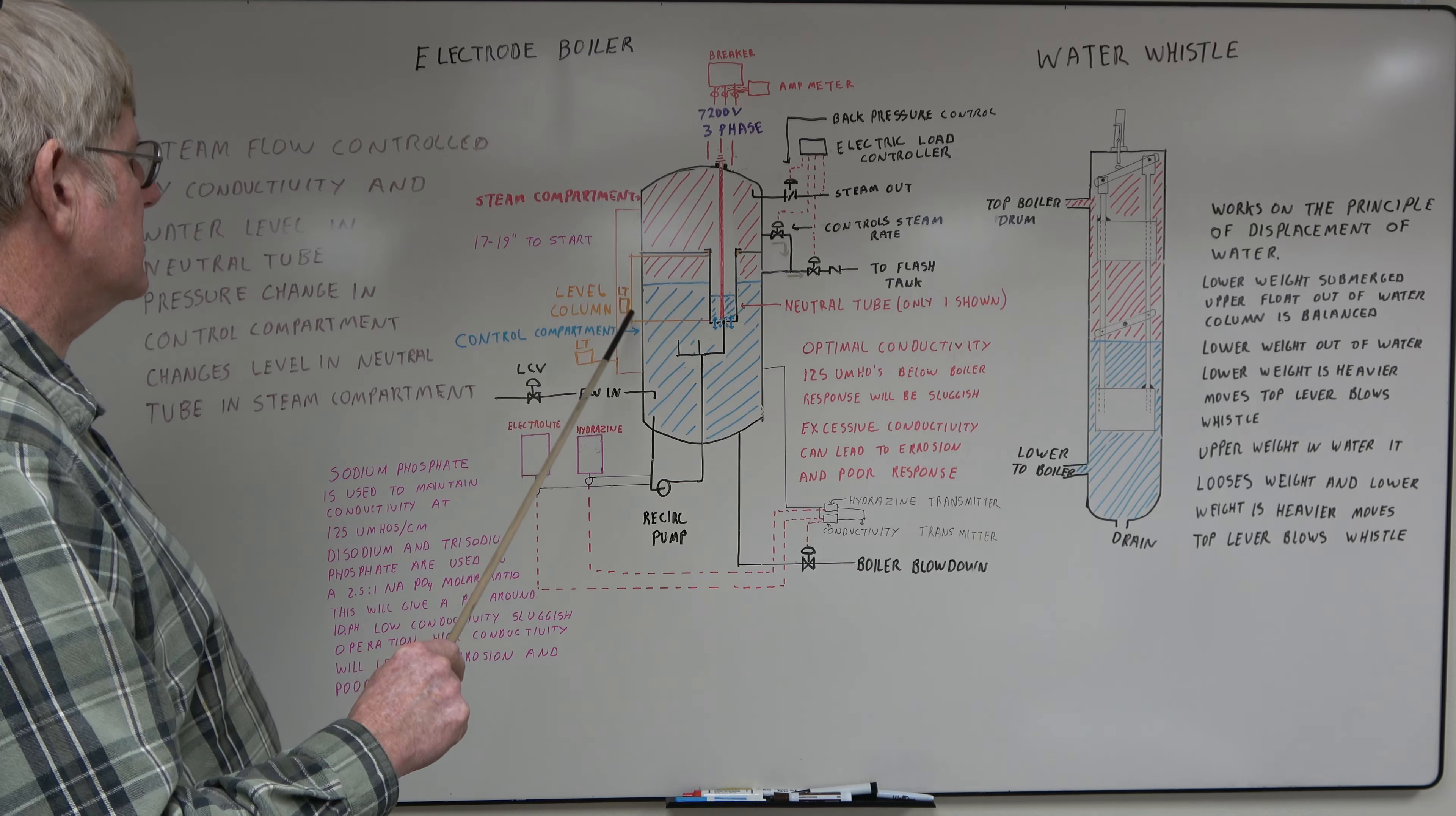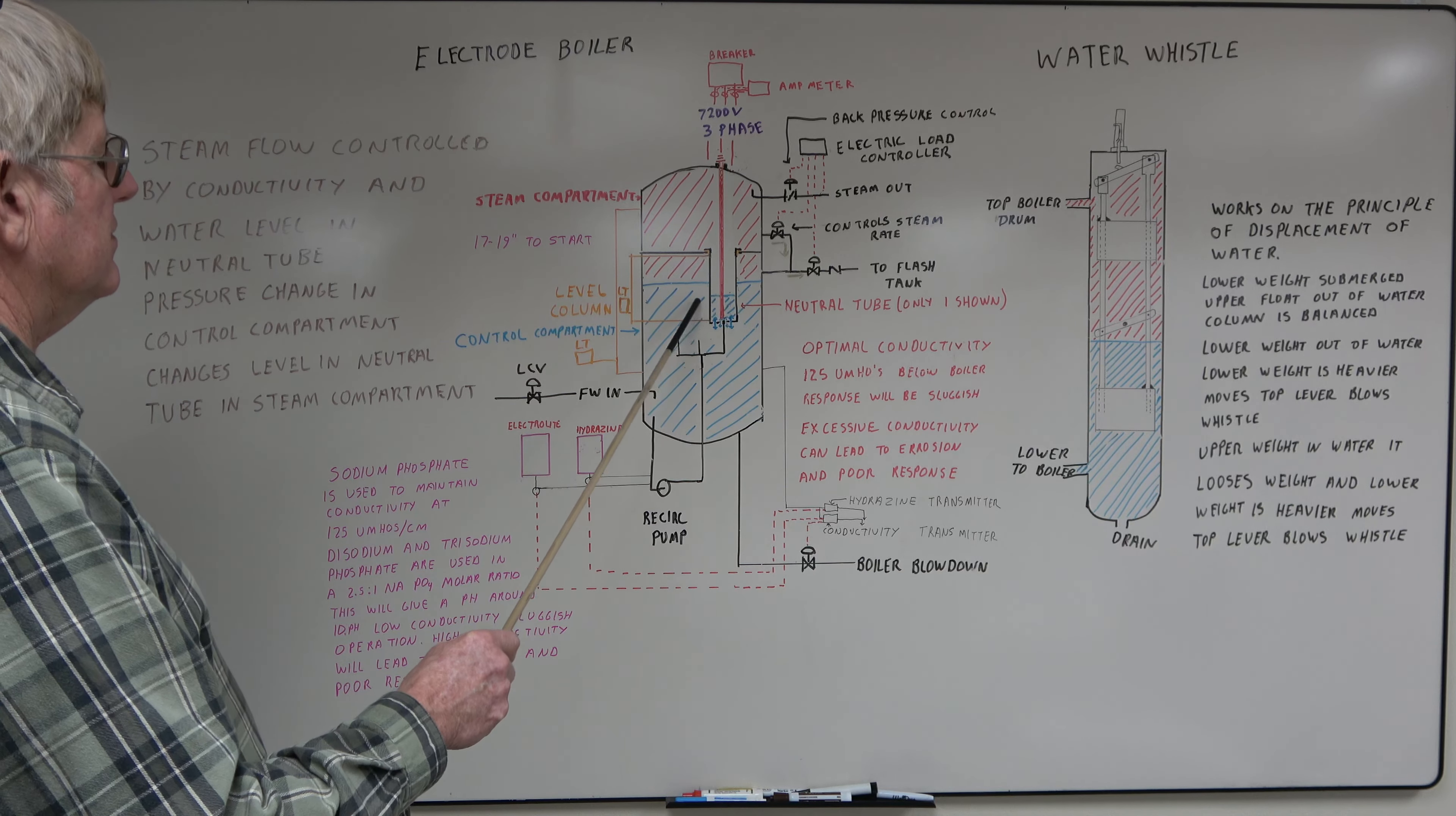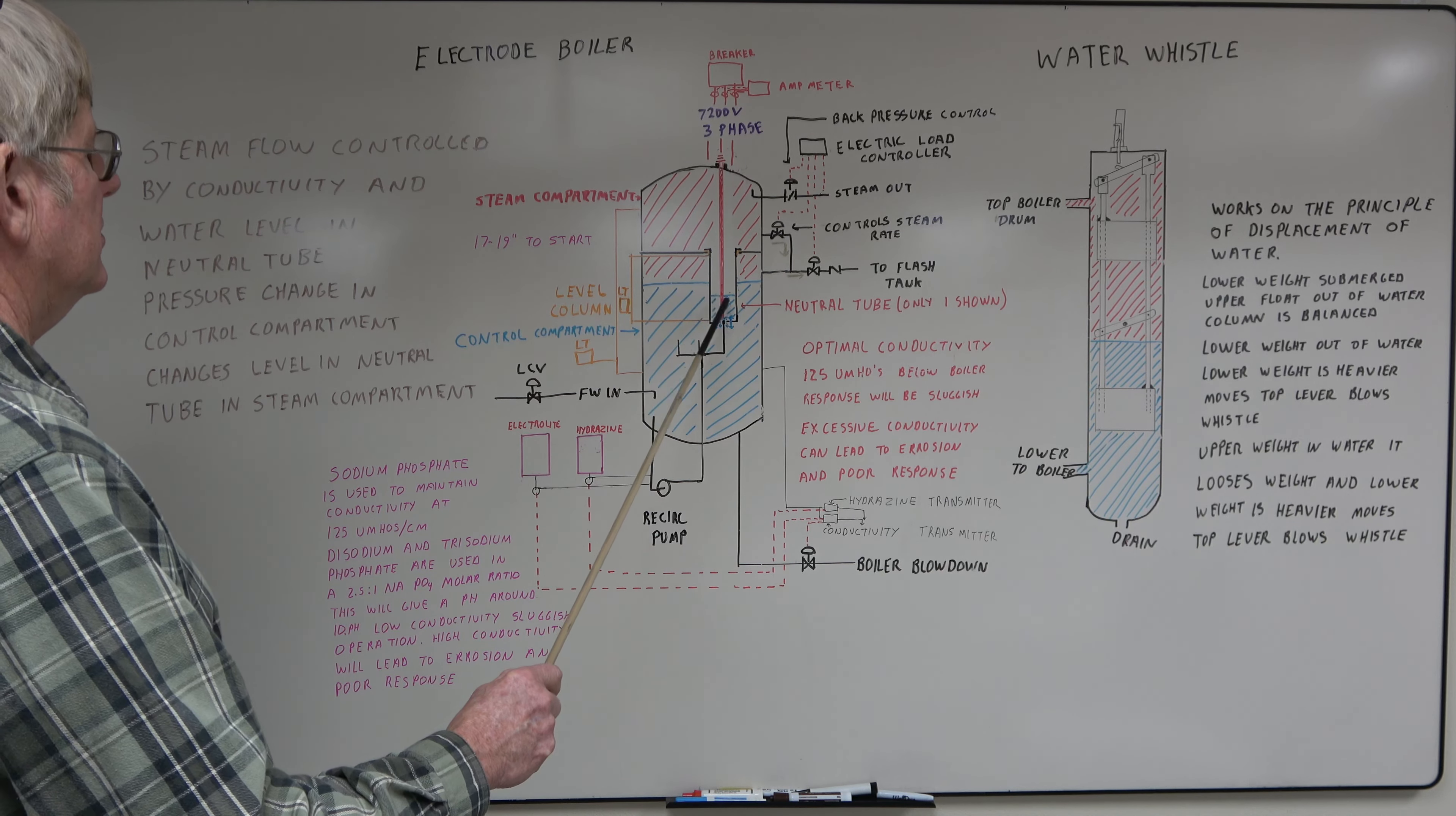Level control column is critical. These have to be between 17 and 19 inches to start. As your water level determines your current flow, you have to maintain a low level to not exceed the startup currents on these.